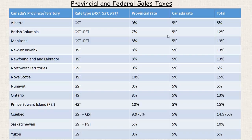This tutorial is on provincial and federal sales tax amounts. This table lists all the different types of taxes for all ten provinces and three territories. Some of them have both a provincial amount and a federal amount. Notice that the federal amount is a straight 5% for every single province and territory.